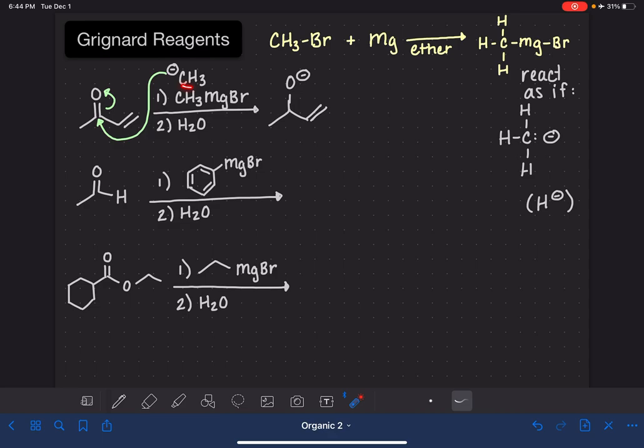And this R group from the Grignard, in this case the CH3 group, is going to attach itself to the carbon of the carbon-oxygen double bond. So we're creating a carbon-carbon bond.